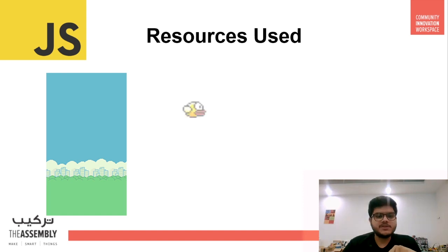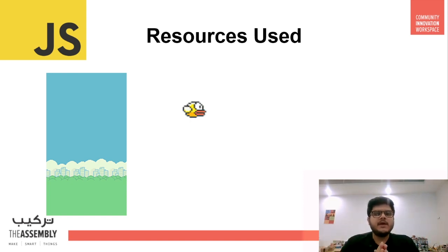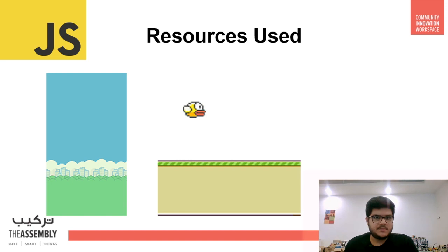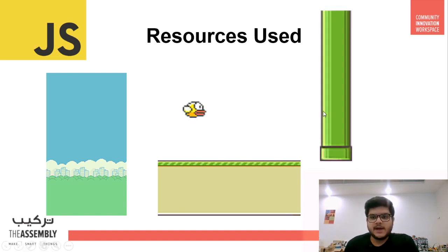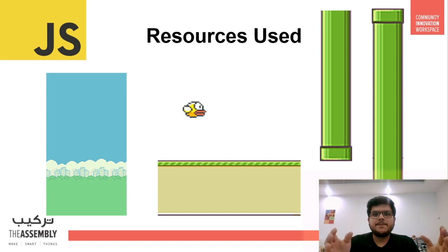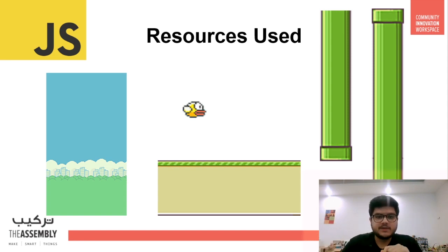Now for the resources we use for this project — all of these will be in the description along with a link to GitHub where you can download them. We have the background image, the Flappy Bird image itself, the foreground, and the pipe images — one for the top pipe and one for the bottom pipe. We also have two audio files: one for when the bird flies and one for when the player scores.